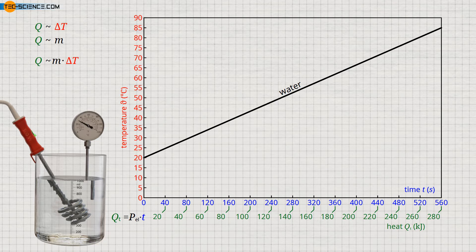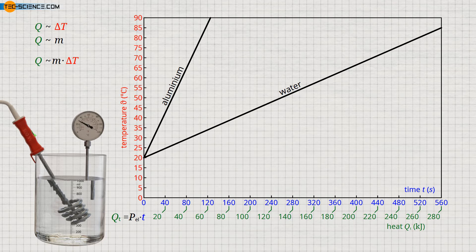If we carry out the experiment with a 1 kilogram aluminum block instead of water, for example, and heat it with the same heating power, then we also obtain a straight line in the diagram. Although the temperature rises faster in this case, it is still true that twice the heat is required for twice the temperature change to be achieved. The proportionality between heat and mass also still applies.